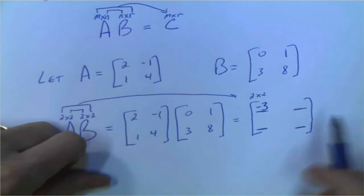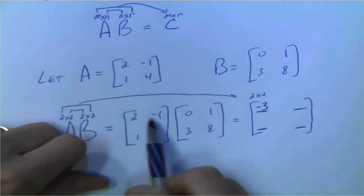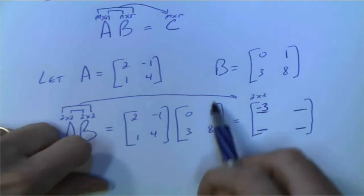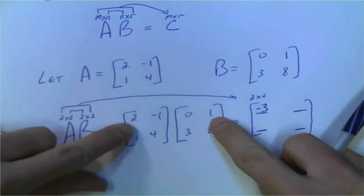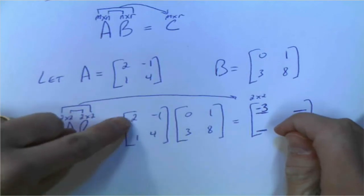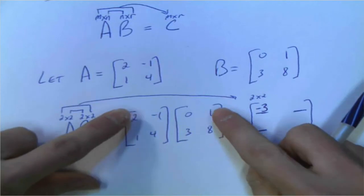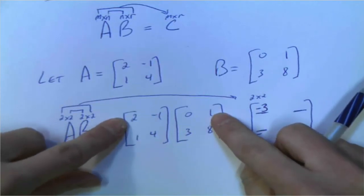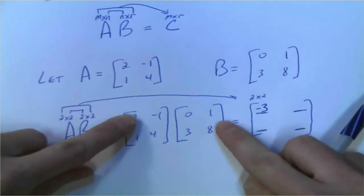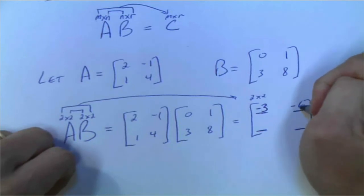Now for the entry at row 1, column 2: we still need the first row, but now we need the second column from the right matrix. Left finger goes to the beginning of the first row, right finger goes to the top of the second column. Multiply: 2 times 1 is 2, then fingers move — negative 1 times 8 is negative 8. So 2 plus negative 8 is negative 6, which goes in that spot.